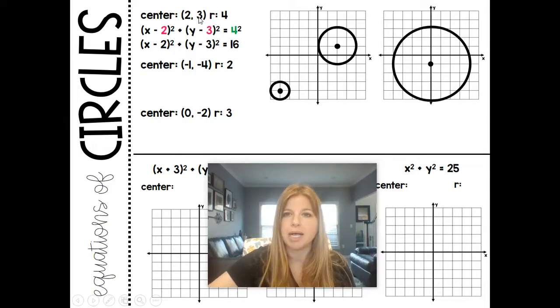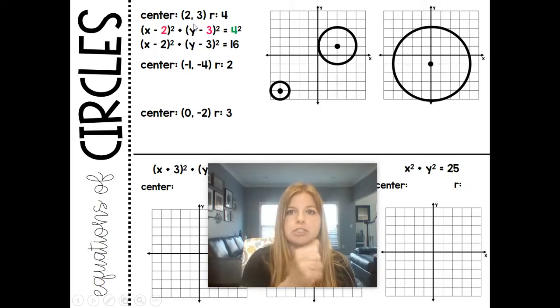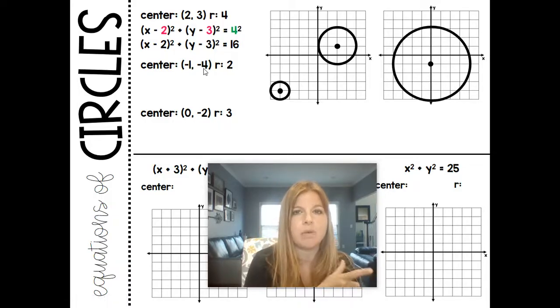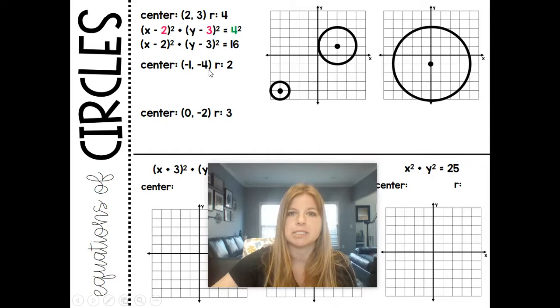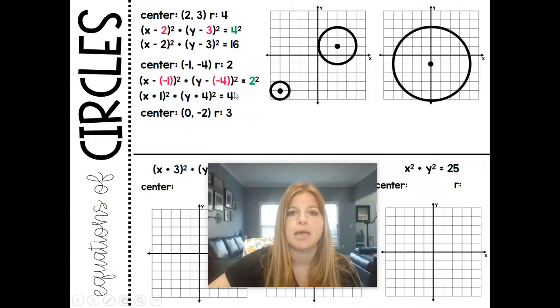So if the values are positive, it's just x minus 2, y minus 3. But now since both are negative, think about what's going to happen there. If it's x minus a negative 1, I really know that's going to become x plus 1. If it's y minus a negative 4, I really know that's going to become y plus 4. And so I end up getting x plus 1 squared, y plus 4 squared equals 4. Because again, you're supposed to take that radius and square it.